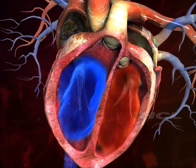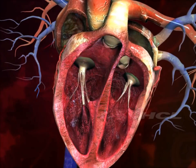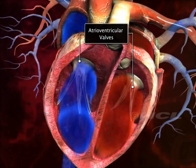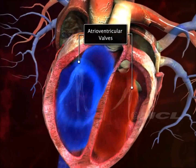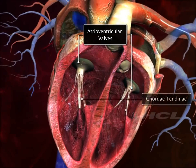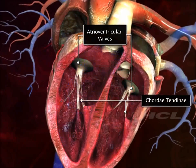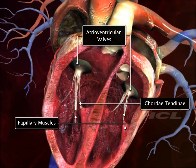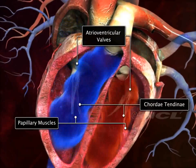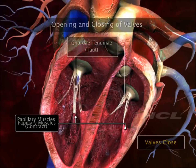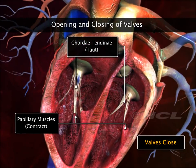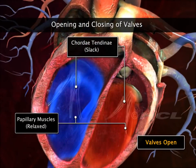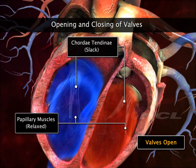The leaflets of these atrio-ventricular valves are connected to fibrous tissue called the chordae tendineae, which in turn are attached to papillary muscles. Contraction and relaxation of these muscles make the valves open and close.